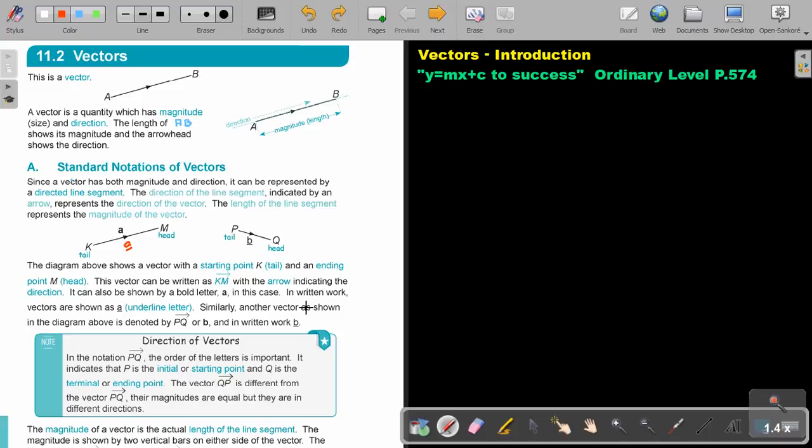Similarly, another vector, as shown in the diagram above, is denoted by PQ or B. And again, it's bold printed. And in written work, it's B underlined.